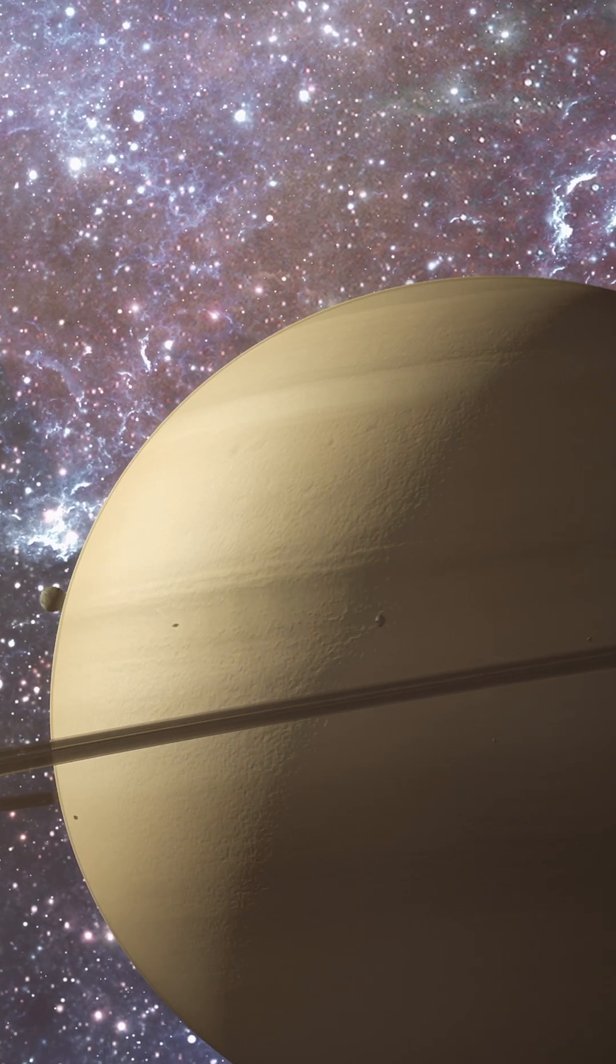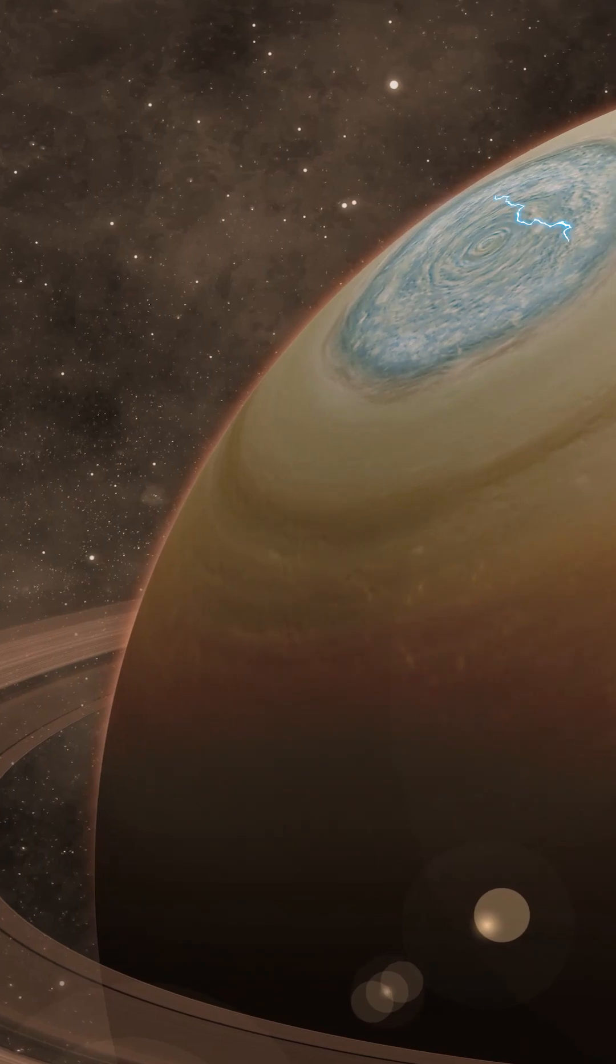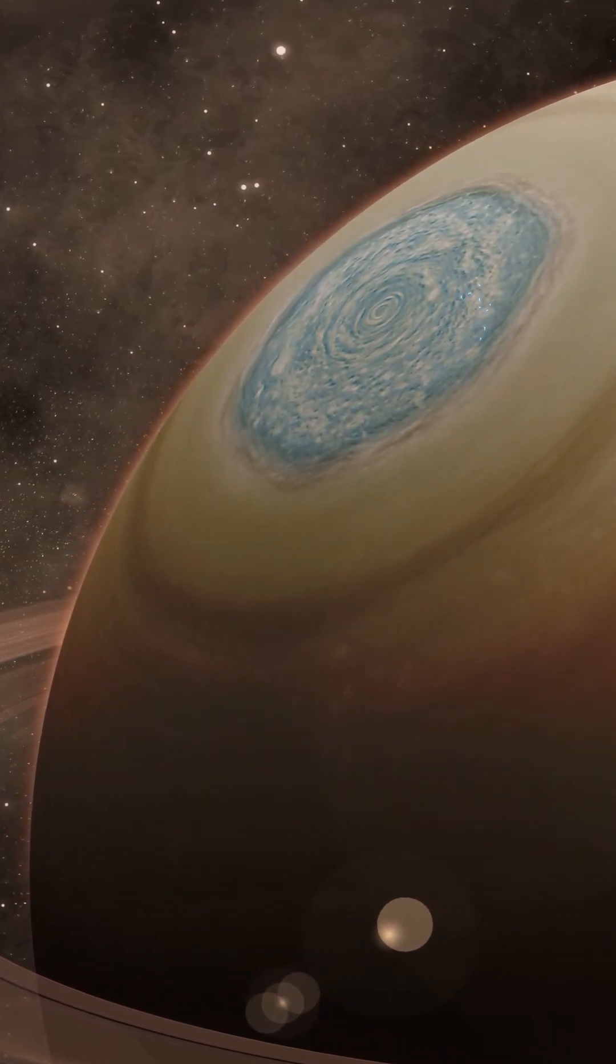Saturn is a planet of wonders. Its iconic rings alone could captivate anyone. But did you know that it also has a massive hexagon-shaped storm swirling at its north pole?